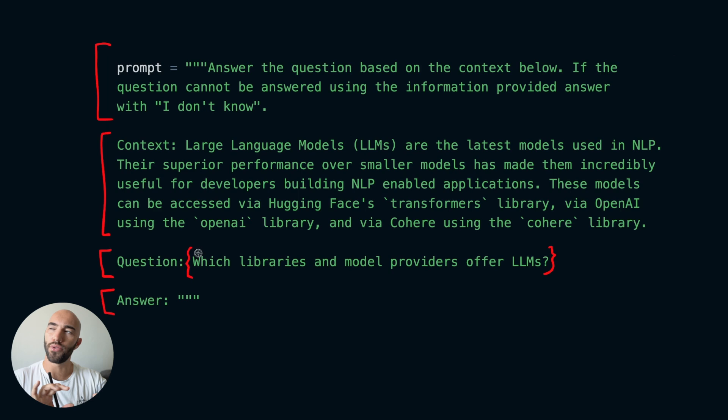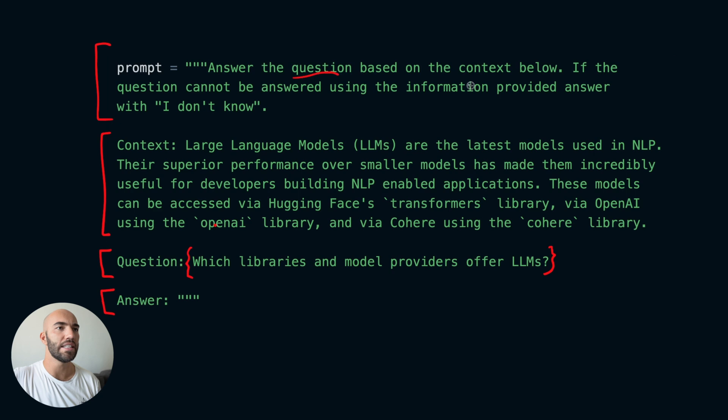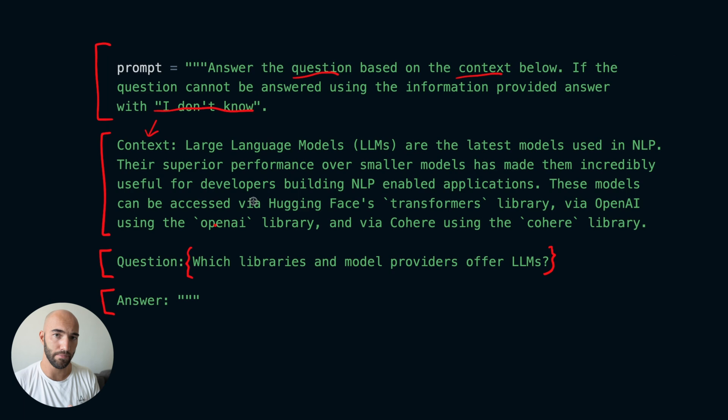We're providing all this other information in order to guide the large language model to answer the question in the way that we think our user would like it answered. In this case, we're doing what I would call factual Q&A — 'answer the question based on the context below; if it can't be answered, say I don't know.' We do this because large language models have a very strong tendency to make things up and make it seem convincing, so this helps avoid that.